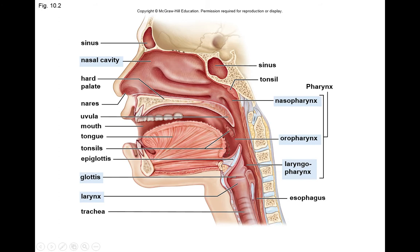The epiglottis is that cartilage covering the larynx when we swallow — the larynx rises up and that flap of cartilage covers the passageway. The whole region where your voice box and vocal cords are located is called the larynx. In the larynx are the vocal cords, and the space between the vocal cords is called the glottis.